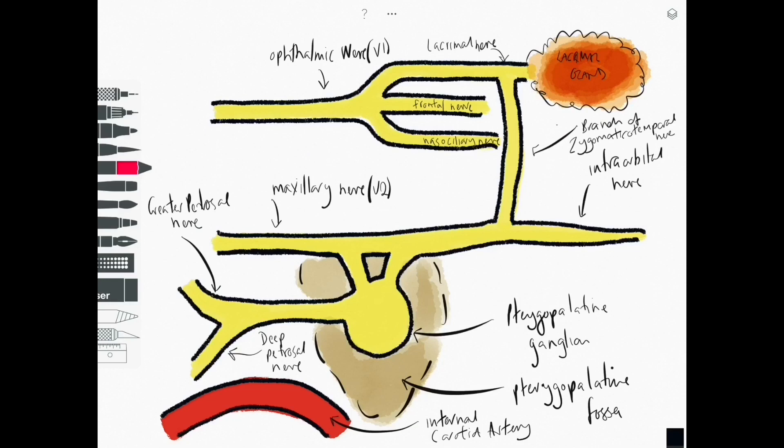So let's start off by talking about the parasympathetic route. The outflow of parasympathetics to the lacrimal gland begins with the facial nerve. The facial nerve travels through the internal acoustic meatus and eventually some of those parasympathetic fibers will travel along the greater petrosal nerve as preganglionic fibers to synapse in the pterygopalatine ganglion.